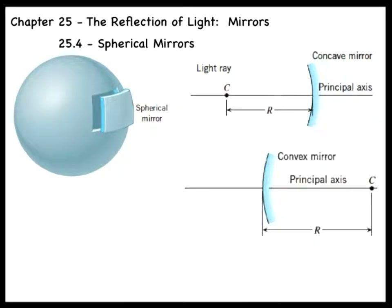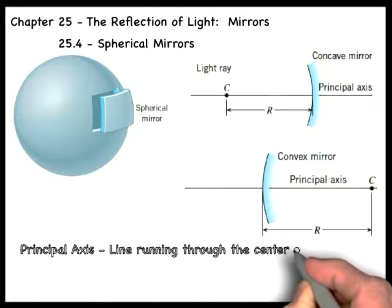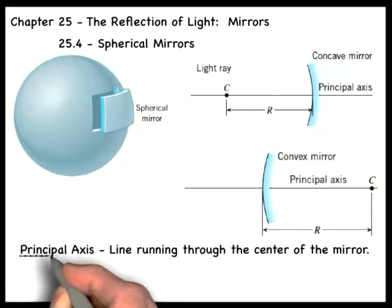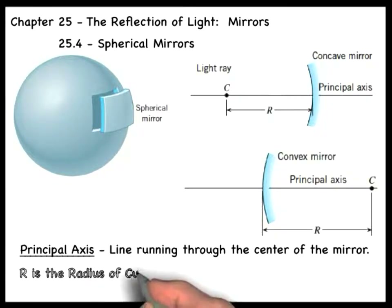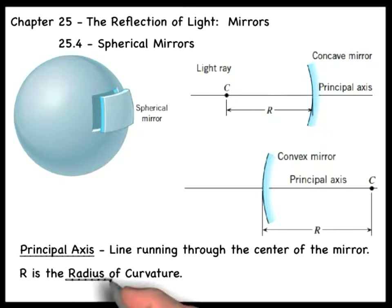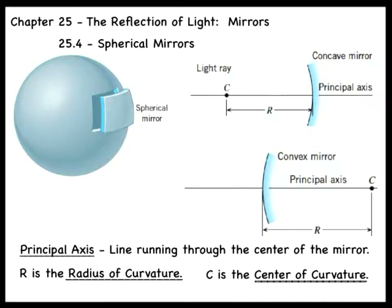The figures show a concave and convex spherical mirror. A line that runs through the center of each mirror is called the principal axis. Each mirror has a radius of curvature r, which is equal to the radius of the sphere from which the segment was cut, and point C locates the center of curvature of the mirrors.